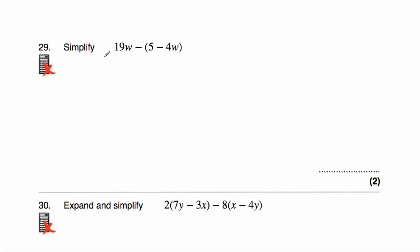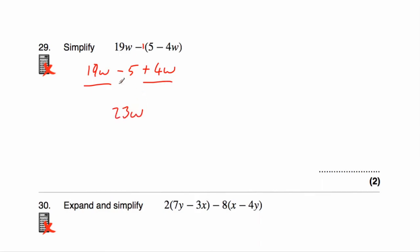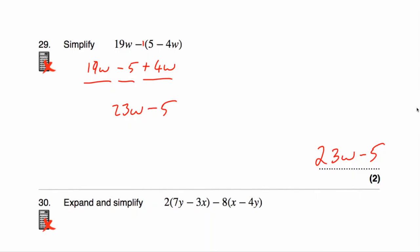Question number twenty-nine asks us to simplify 19w − (5 − 4w). That means 19w minus one lot of this bracket, so we multiply what's inside by negative one. Negative one times five is negative five, so minus five. And negative one times negative 4w — negative times negative is a positive — so plus 4w. Collecting like terms: 19w + 4w is 23w, minus five. The answer is 23w − 5.